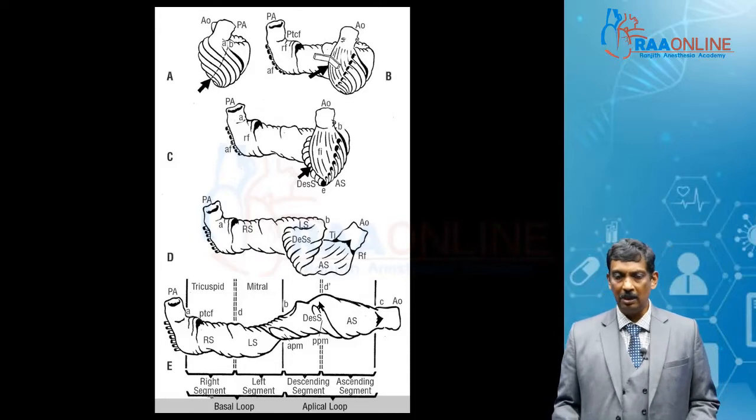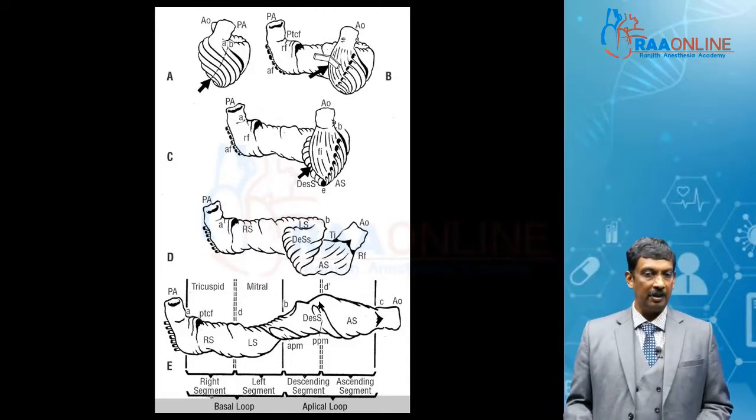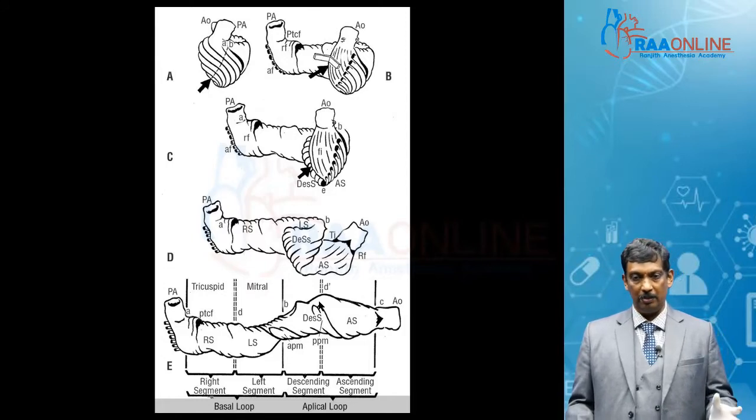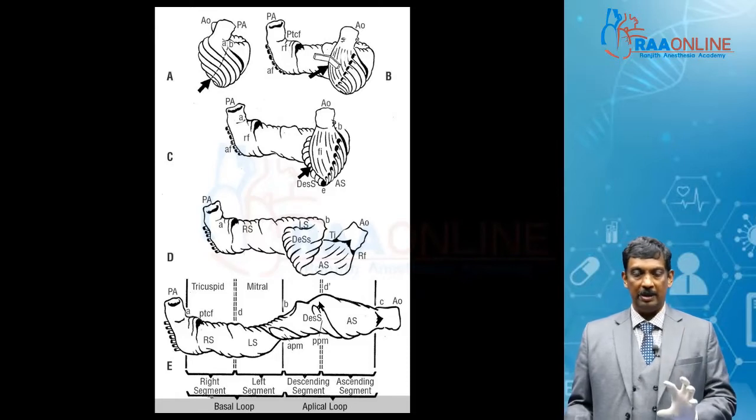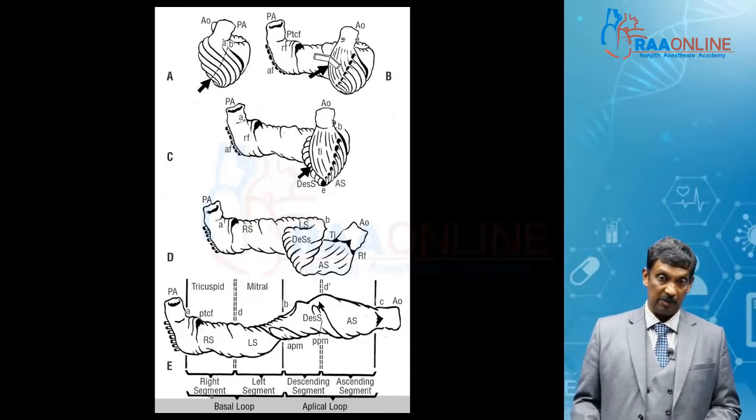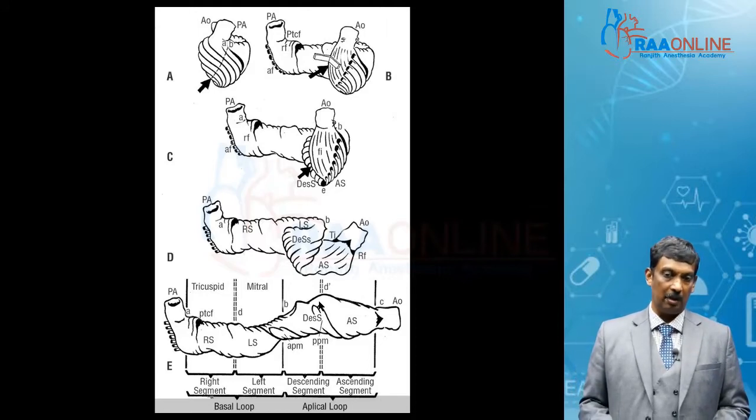The basal loop has a right segment and a left segment. The right segment is between the pulmonary artery and winds around in its attachment to the tricuspid valve. The left segment winds circularly in the LV around the mitral valve.